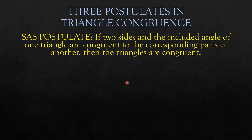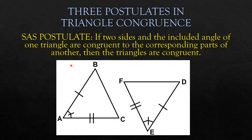The SAS postulate states that if two sides and the included angle of one triangle are congruent to the corresponding parts of another, then the triangles are congruent. In the illustration, you can see that angle A is an included angle of the two sides AB and AC. These parts of triangle ABC are congruent to its corresponding parts in triangle DEF.